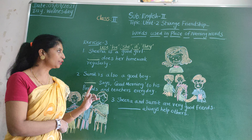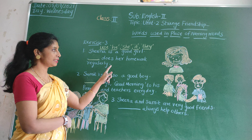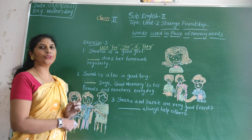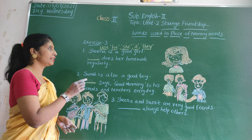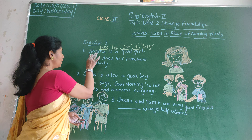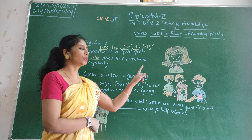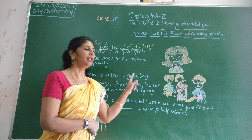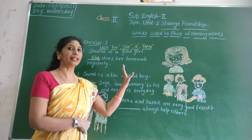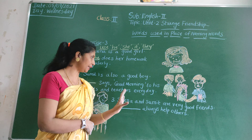Look at the first picture. Sheena is a good girl. Dash does her homework regularly. Sheena is a girl, so we write 'she'. She does her homework regularly.